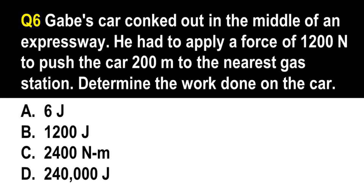Question number 6. Gabe's car conked out in the middle of an expressway. He had to apply a force of 1,200 newtons to push the car 200 meters to the nearest gas station. Determine the work done on the car. A. 6 joules. B. 1,200 joules. C. 2,400 newton meters. D. 240,000 joules. The correct answer is letter D, 240,000 joules. The formula for work is: work = force × distance. So 1,200 newtons × 200 meters = 240,000 newton meters, and newton meters equals joules.